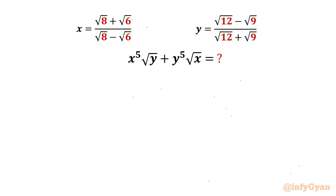Welcome back to InfiJarn, my dear friends. In this video we are going to take up one very interesting question from algebra. Here we have x is root 8 plus root 6 over root 8 minus root 6, and y is root 12 minus root 9 over root 12 plus root 9. Then it is said to find out x power 5 times root y plus y power 5 times root x.